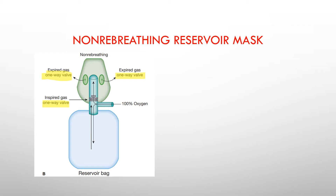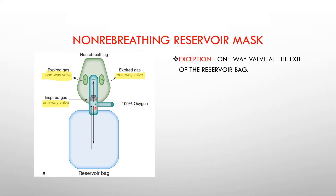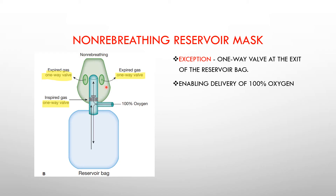Non-re-breathing mask: it's similar to a partial re-breathing mask with the only exception of a one-way valve present at the exit of the reservoir as well as in the side ports. During the high flow of oxygen of up to 8 to 15 liters, this bag gets inflated. Once inflated, during the phase of inspiration the patient breathes in, and during expiration the expired air is prevented from flowing back into the reservoir due to the one-way valve. The rest of the expired air exits through the side ports, and the one-way valve in the side port prevents re-entry of expired air during inhalation.